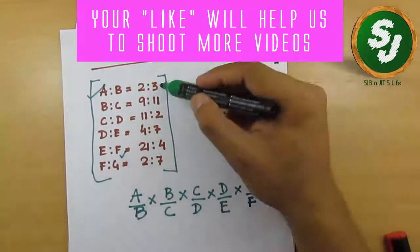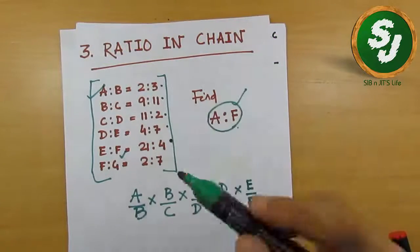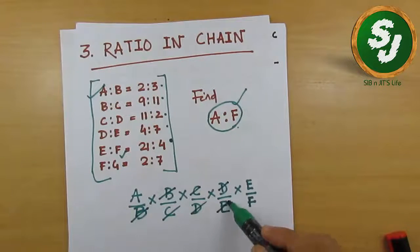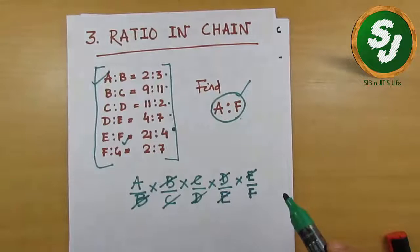If I multiply all these five elements one after one, then what will happen? B-B will cancel, C-C will cancel, D-D will cancel, E-E will cancel, and the remaining part will be A and F, which is automatically A/F or A:F, which is asked in the question.